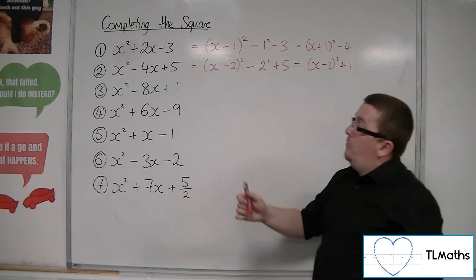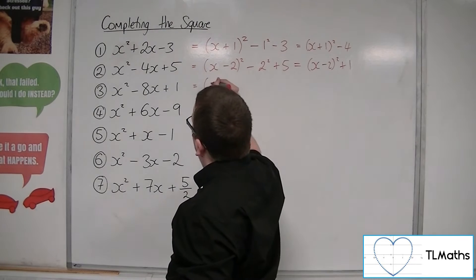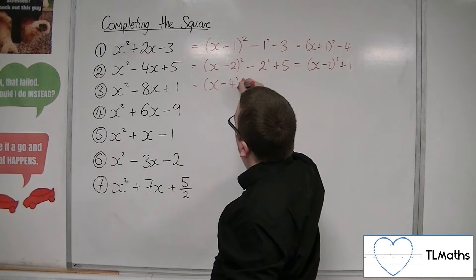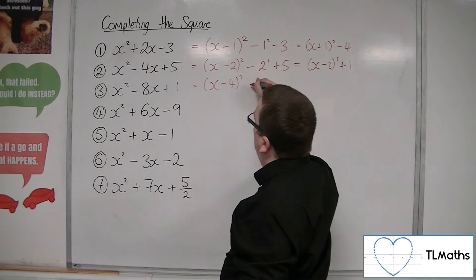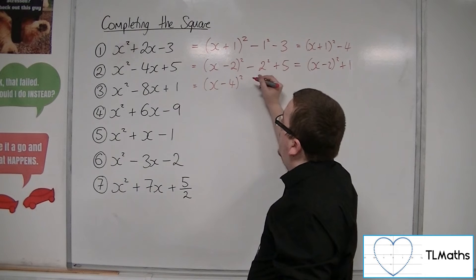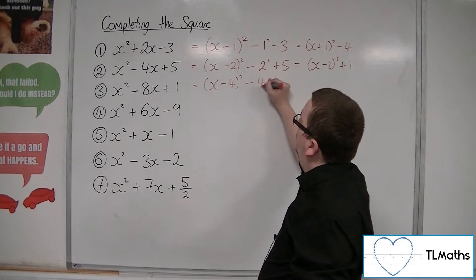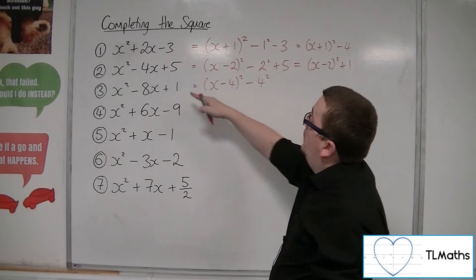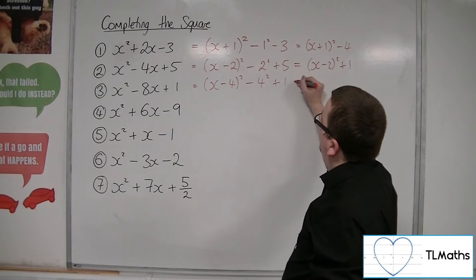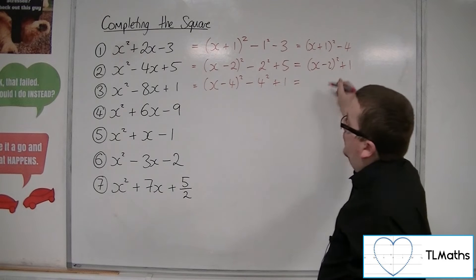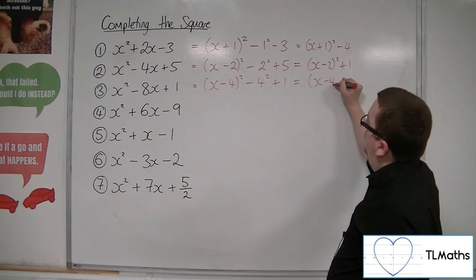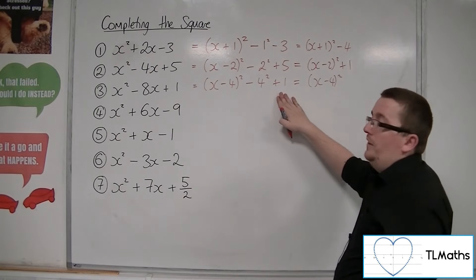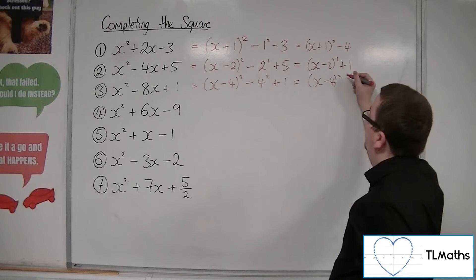Number 3: we're going to have x and then half of minus 8, so minus 4, squared. Take away minus 4 squared — so take away 4 squared — and then we've got the plus 1 on the end. So we've got x minus 4 squared, minus 16, plus 1, so minus 15.